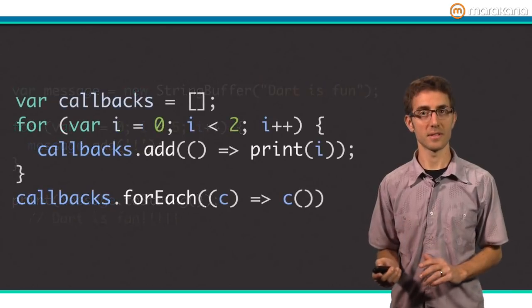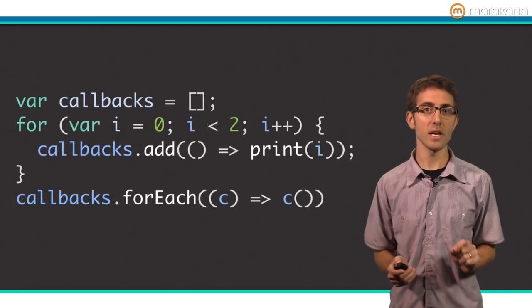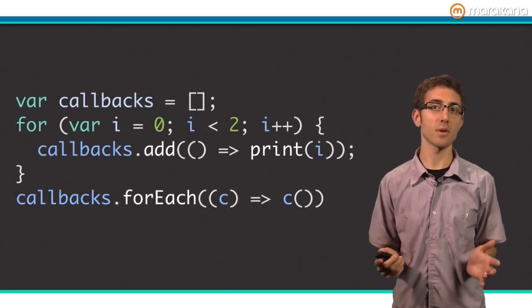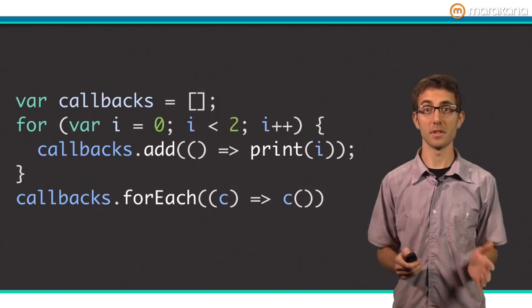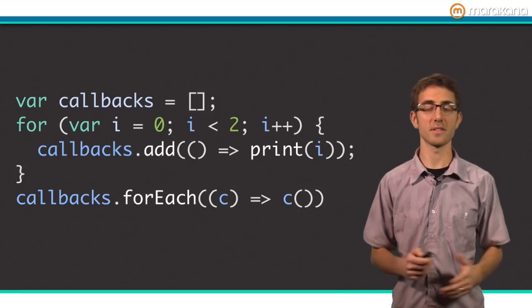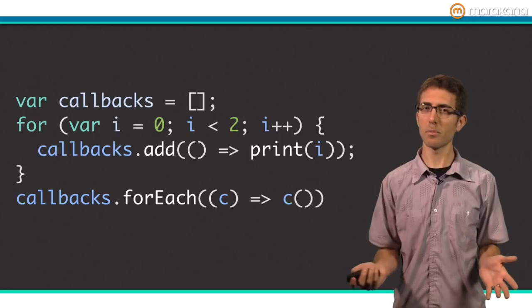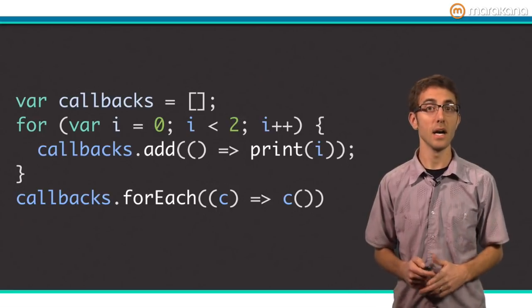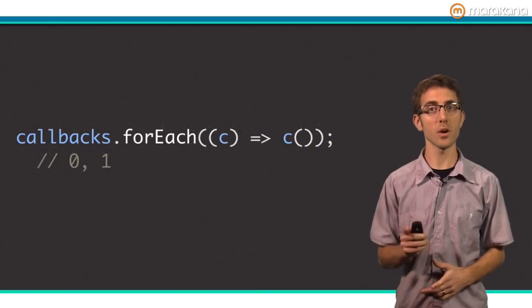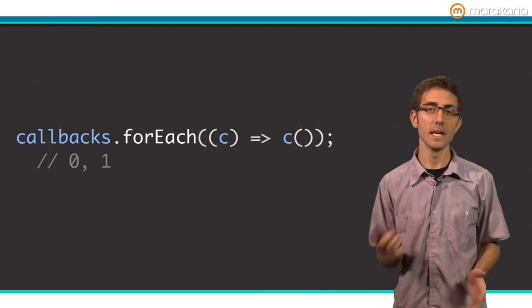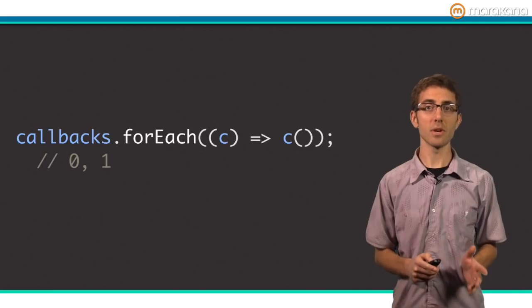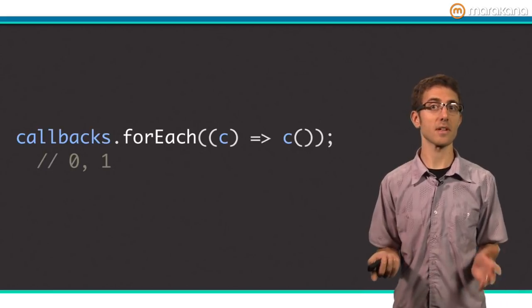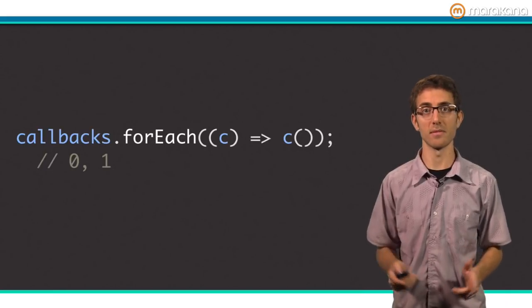Let's consider a more complex example. Here, callbacks are created inside a for loop, each closing around the loop variable i. After the loop, each callback is run, printing out its number. The question is, what will print out? Or a better question is, what would you expect to print out? Unlike traditional web programming languages, Dart will print 0 and then 1. Why is this? Inside a for loop, each iteration gets its own variable. This prevents common errors when using closures inside of loops.